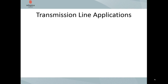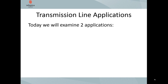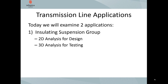For today's webinar, we will use ElecNet to analyze two applications. The first is a generic insulation string for transmission line suspension systems. The insulation string design is taken from an EPRI report which defines this generic design. We will examine the insulator using two types of analysis: first in 2D to look at designing the insulator, and second in 3D with the insulation string installed on a transmission line, where we will look at how the electric field stresses are affected by surrounding structures to validate the design.